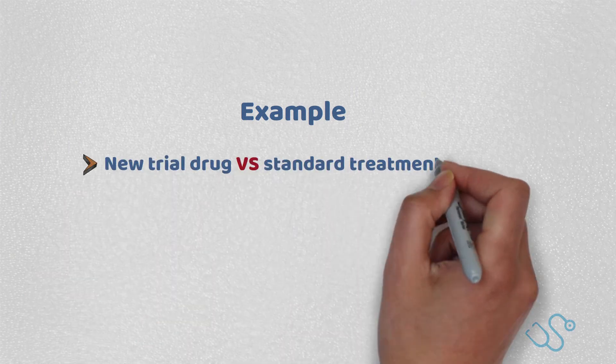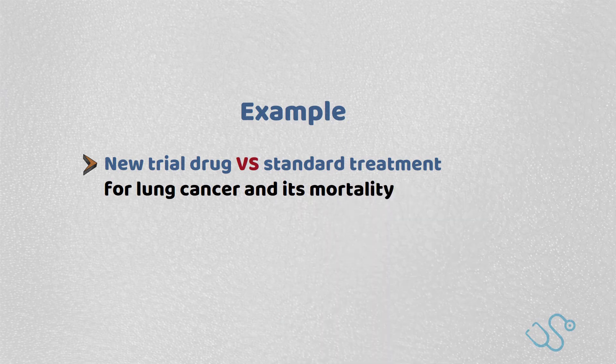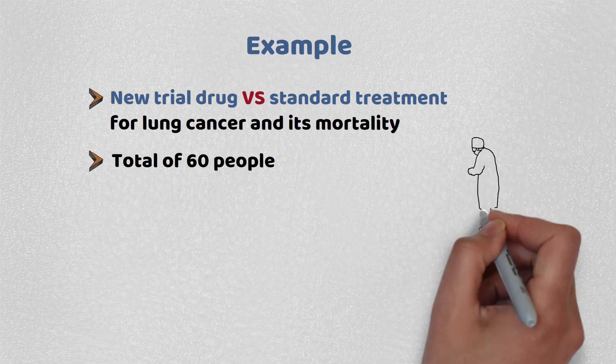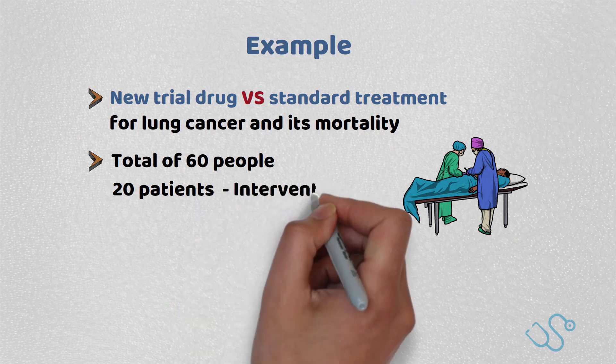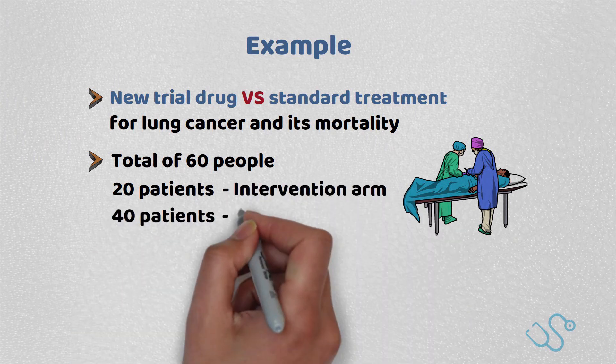This is best described with an example. Imagine there's a new study that's comparing a new trial drug versus standard treatment for lung cancer and its mortality. Imagine there was a total of 60 people in the study, with 20 patients in the intervention arm and 40 patients in the control arm.